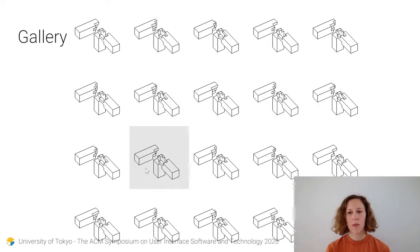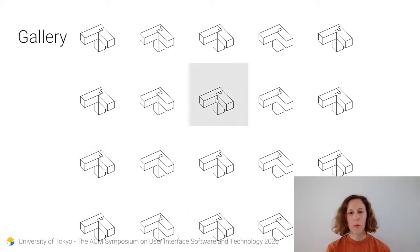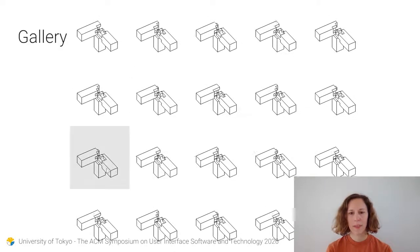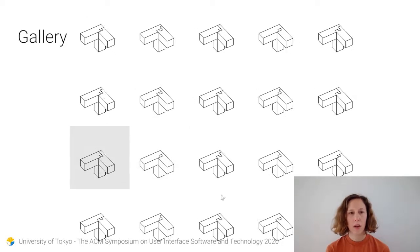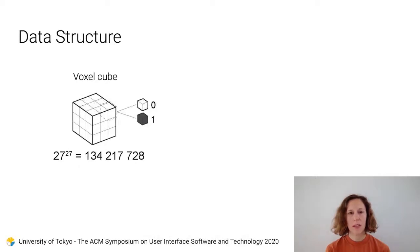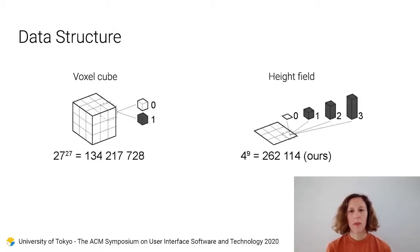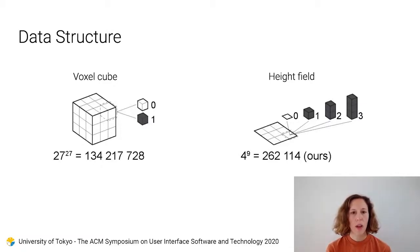There is also a gallery mode in which the user can browse through valid joints. These are pre-calculated by a complete combinatorial search. You might wonder, considering the exponential growth of possibilities, how can we cover all the combinations? Even for a relatively simple joint between two timbers in a 3x3x3 resolution, there are over 134 million possibilities. We solve this by initiating a geometry as a height fill, which greatly reduces the number of possibilities from 134 million to the more manageable number 260,000. The height fill restriction is related to the direction constraint of the fabrication setup.